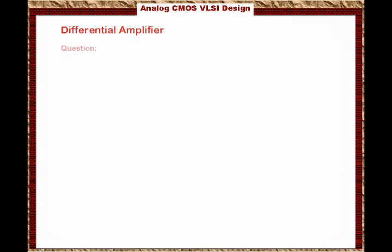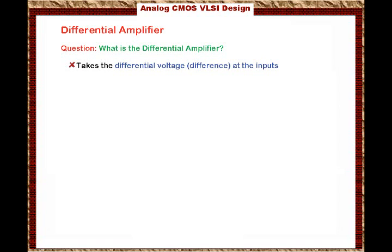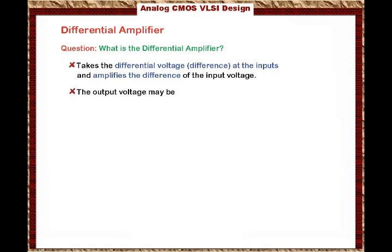We are ready to introduce the concept of the differential amplifier. The differential amplifier takes the differential voltage — the voltage difference at the input — and then amplifies the difference of the input voltage and sends it to the output. The output voltage may be single-ended, as in the op-amp, or it can be a differential output.